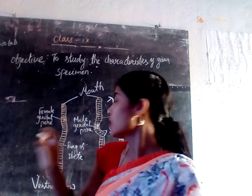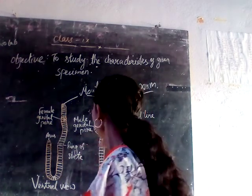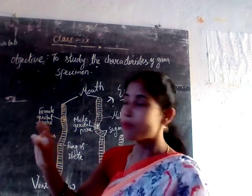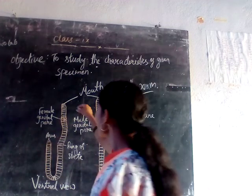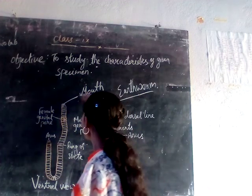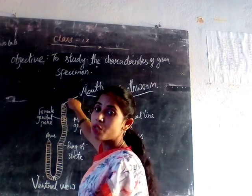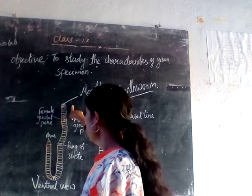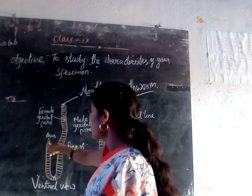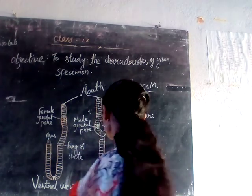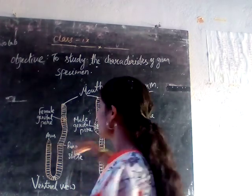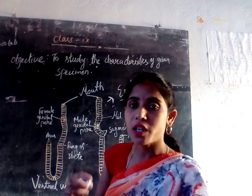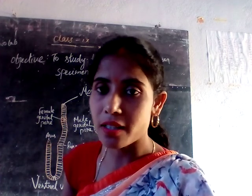The rest of the features will be similar. This is the opening of the earthworm — we call it the mouth — it is here. And this is the last ending of the earthworm, which we call the anus, from where the waste materials are excreted.